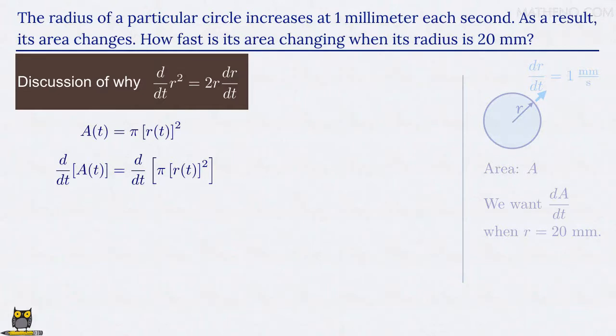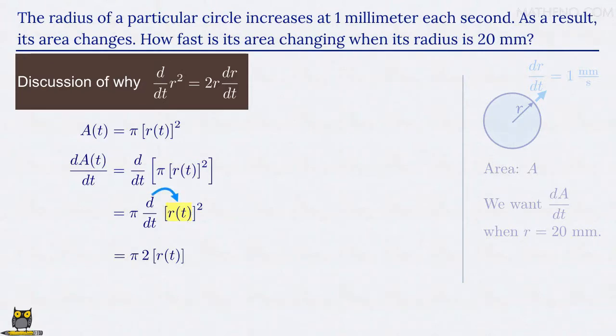Now the left-hand side, again, is the rate dA(t)/dt. On the right-hand side of the equation, we can again pull the π out since that's a constant, and we're left with the derivative d/dt of something in brackets that's squared. As usual, when we take the derivative, the 2 comes down in front, and we have π times 2 times that thing in brackets, which is r(t). But we also have to remember the chain rule and apply d/dt to what's inside the brackets, which gives us the chain rule term d/dt of r(t).